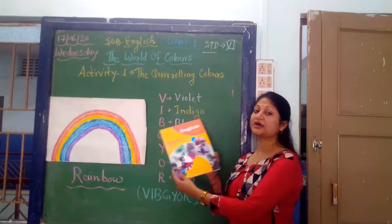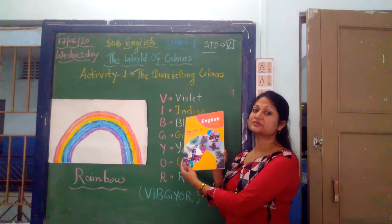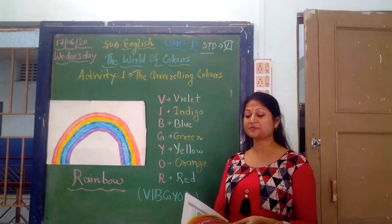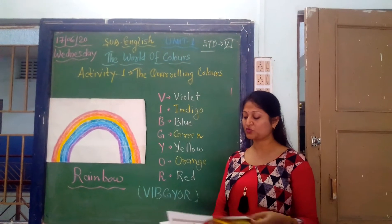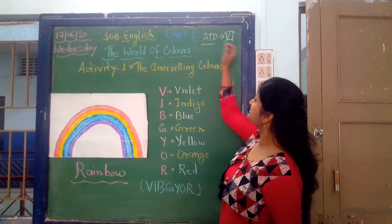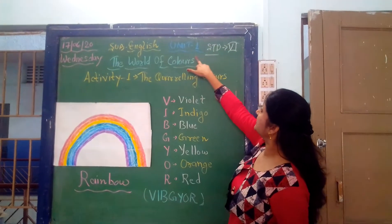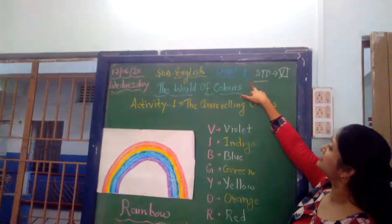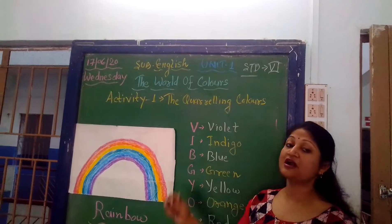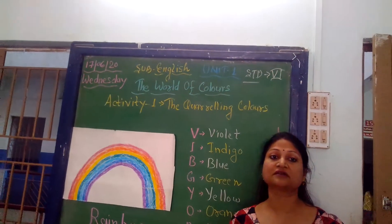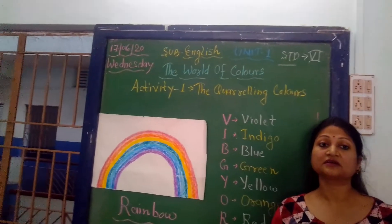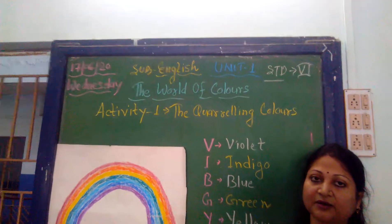Take out the English book and open page number 2. Today our lesson is Unit 1 and the lesson name is 'The World of Colors' — that means Rangokki Duniya.